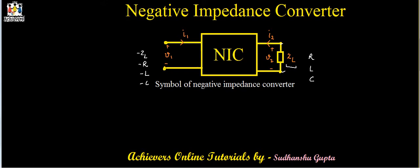This property of the negative impedance converter is very useful in network theory. For example, losses in the positive resistance of a network can be cancelled by including a resistively loaded negative impedance converter in the network.